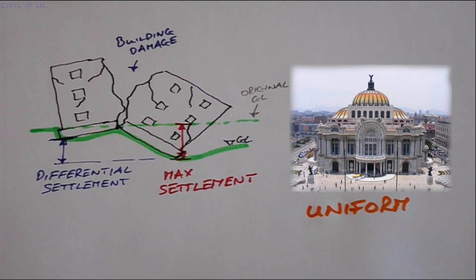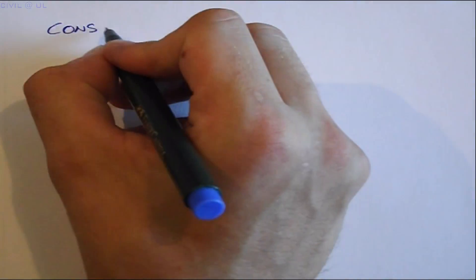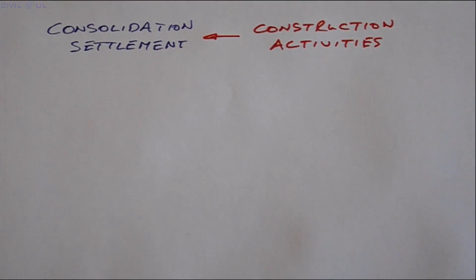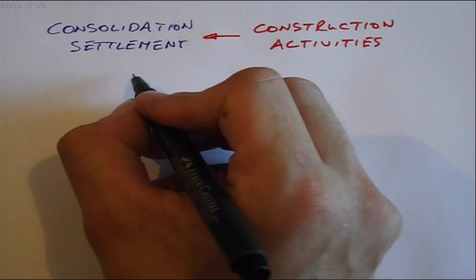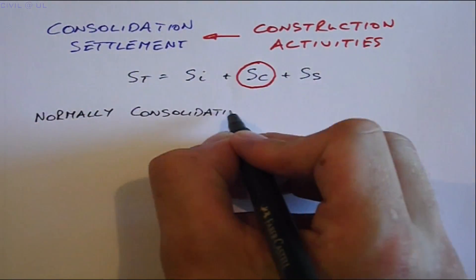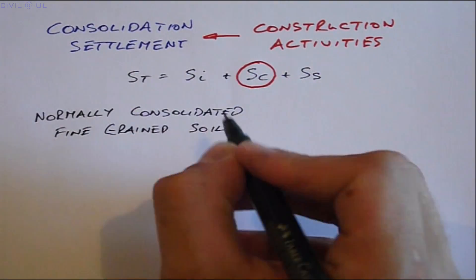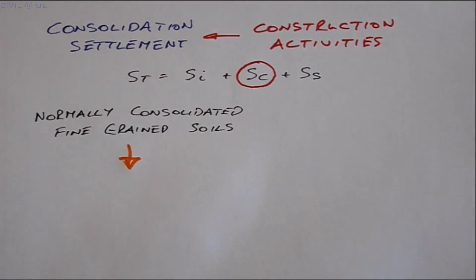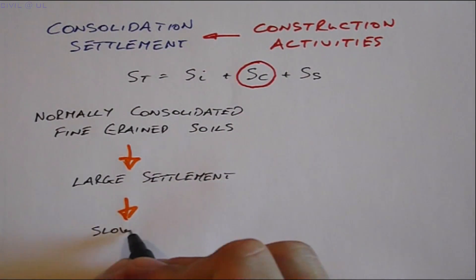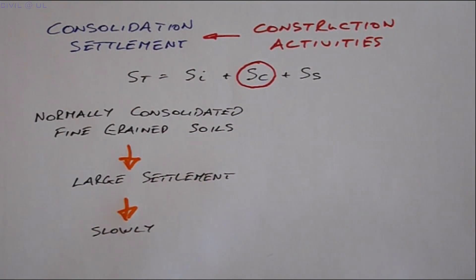In this video, we'll concentrate on estimating the magnitude of consolidation settlement due to construction activities. The reason for this is that consolidation settlements are generally the dominant component of the total settlement calculation, particularly in normally consolidated fine grain soils. Such soils usually produce large amounts of settlement over a long period of time after construction is complete.